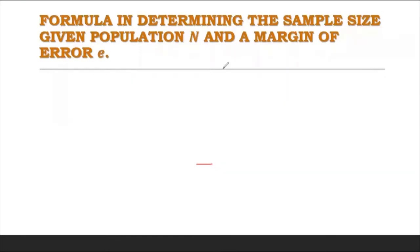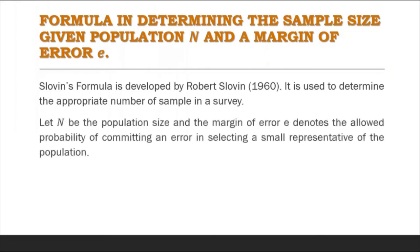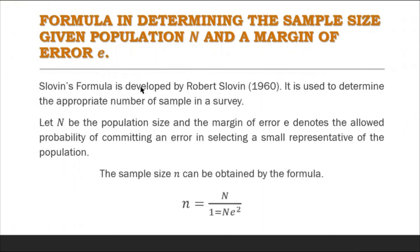Formula for determining the sample size given population N and a margin of error E — Slovin's Formula: developed by Robin Slovin in 1960, it is used to determine the appropriate number of samples in a survey. Let big N be the population size and small e denote the allowed probability of error in selecting a representative sample. The sample size small n is obtained by the formula: n equals N all over 1 plus N times e squared.